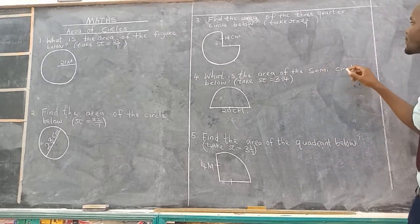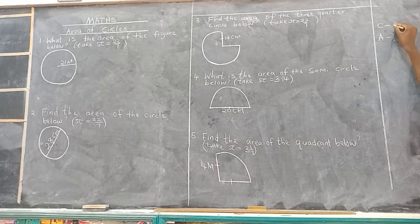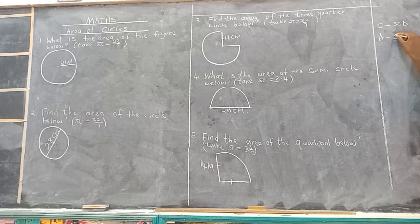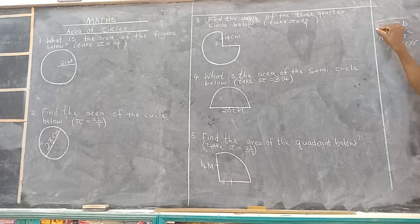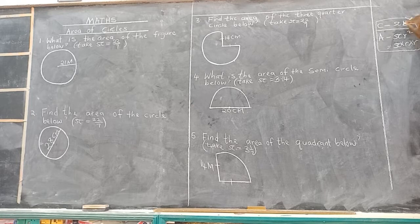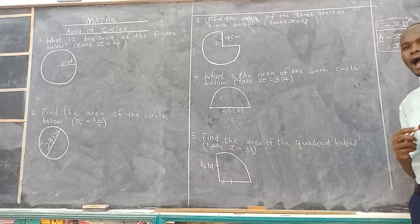Remember, there is a difference between the formulas for circumference and area of a circle. If it is circumference, we use pi times diameter. Now we are talking about area, which is pi r squared, meaning pi times radius times radius. When we talk about circumference we use diameter, but when we talk about area we use radius — that is pi r squared.